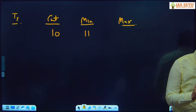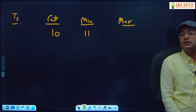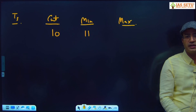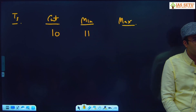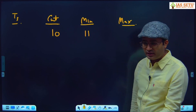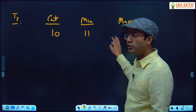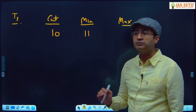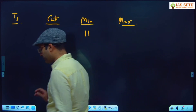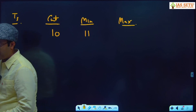If any of you tried this question at home, what is your answer? Some might have got 75, 80, or 36. Number of cuts is 10, minimum pieces is 11 — try to find the maximum number of pieces possible so that in the exam we can avoid mistakes.